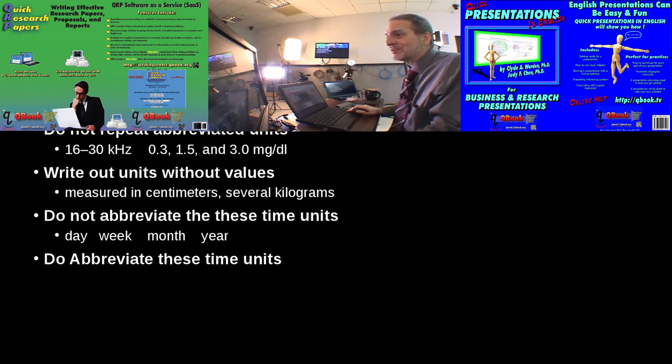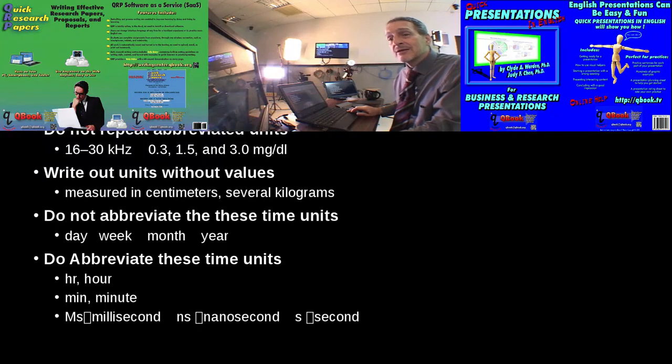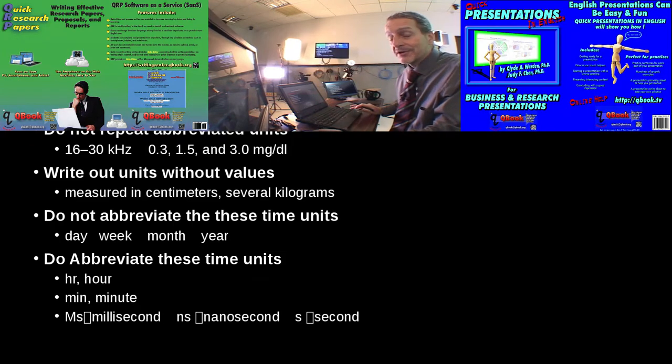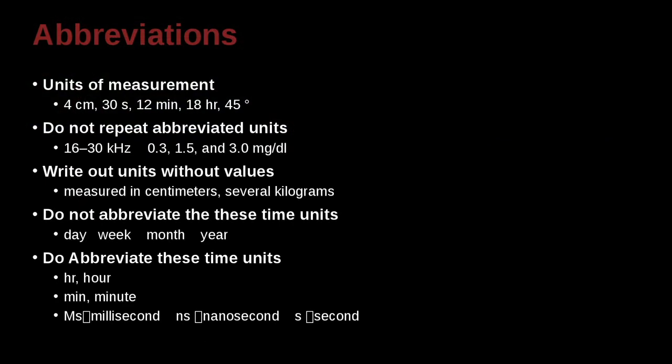Go figure. You can abbreviate these units of time, however, hour, hr, minute, min, millisecond, ms, nanosecond, ns, and s, per second. Please don't ask me why. It's just the rule that APA has. I think the main reason is avoid confusion, but just learning it confuses me.